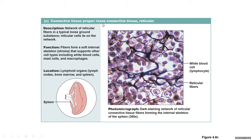Loose connective tissue — reticular: a network of reticular fibers in a typical loose ground substance; reticular cells lie on the network. Function: fibers form a soft internal skeleton or stroma that supports other cell types including white blood cells, mast cells, and macrophages. Location: lymphoid organs — lymph nodes, bone marrow, and spleen. Reticular connective tissue is the framework for lymphatic tissue; the organs of the lymphatic system are made of this reticular tissue.